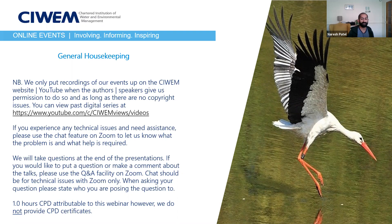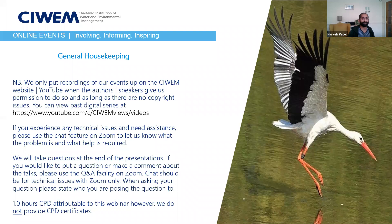The UN Decade of Biological Diversity 2021 to 2030 focuses on ecosystem restoration — it's a rallying call for the protection and revival of ecosystems all over the world for the benefit of people. It aims to halt degradation of ecosystems and restore them to achieve global goals. The UN decade runs to 2030, which is also the deadline for the UN Sustainable Development Goals and the timeline scientists have identified as the last chance to prevent catastrophic climate change.